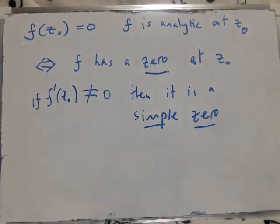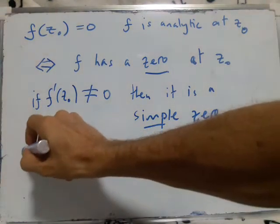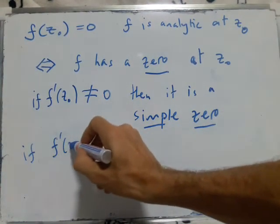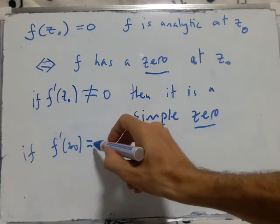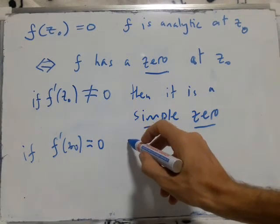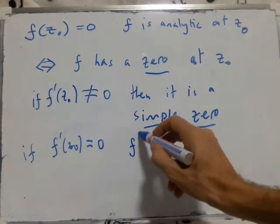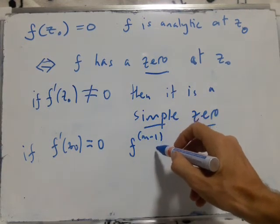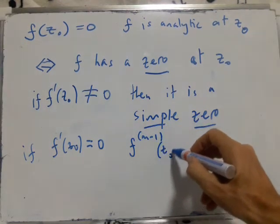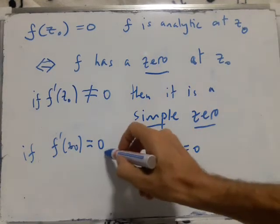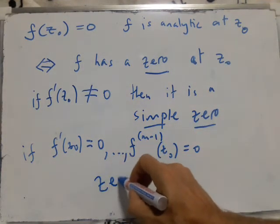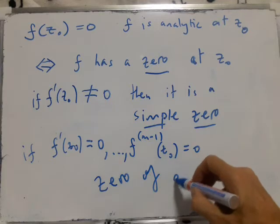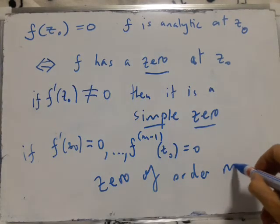Otherwise, if f dashed at z0 is 0, and all the derivatives up to m minus 1 are 0, then we say it's a zero of order m.